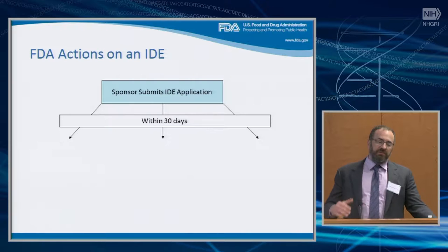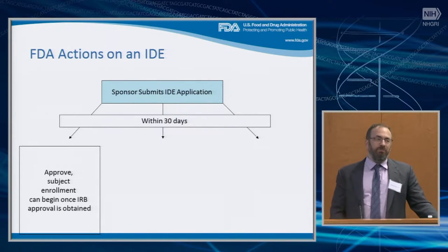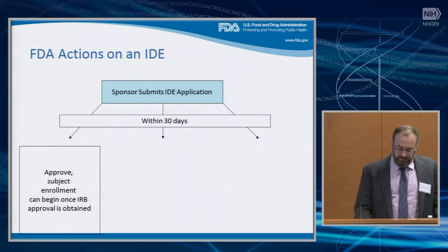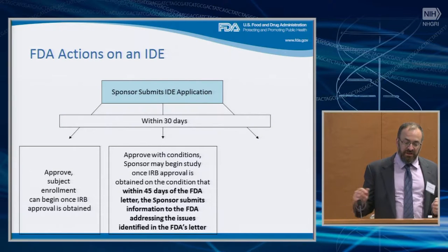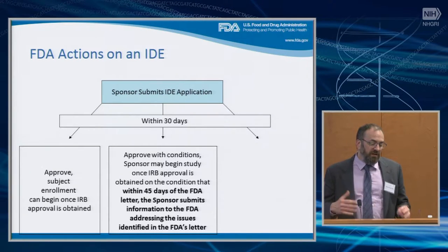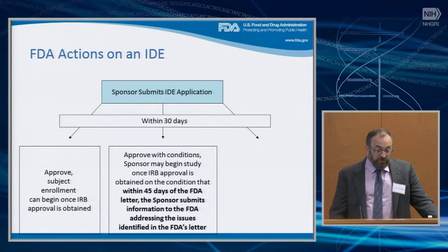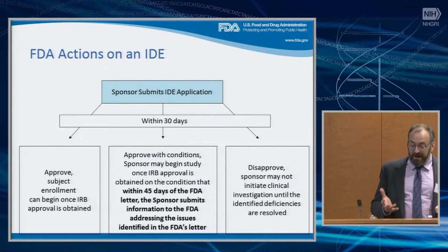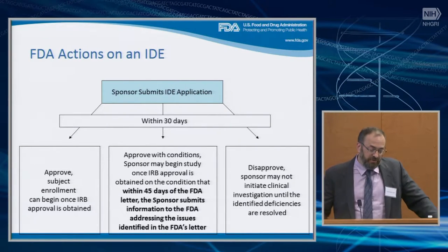FDA actions on the IDE: you've submitted your IDE, it's day 30, and you receive notification that you are one of three things. Approved — you can begin enrolling subjects once IRB approval is obtained. Approved with conditions — this means you can begin your study once you have IRB approval, but you have 45 days to make certain changes, such as changes in the informed consent document. They won't be big things like analytical validation studies, but often there are tweaks FDA will request that won't hold up the study. Third, it's rare for IVDs but you may be disapproved. If disapproved, you'll receive a letter documenting the deficiencies and the reason, and you can submit a supplement or a new IDE addressing those deficiencies.